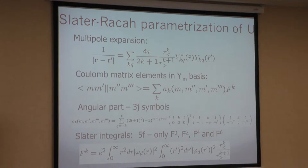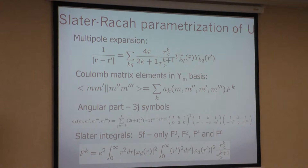What about U? Hardy Gross, who liked DFT but not DMFT, said 'life without you' — meaning life without U. And in Dutch, U is exactly 'jij.' How do you parameterize this U? The simplest parameterization is the atomic-like parameterization, which was historically the first to be used.